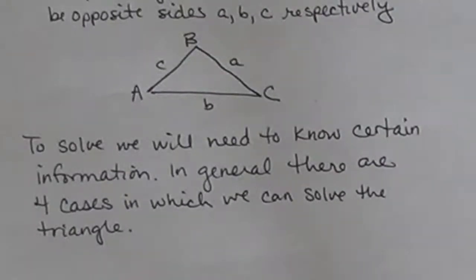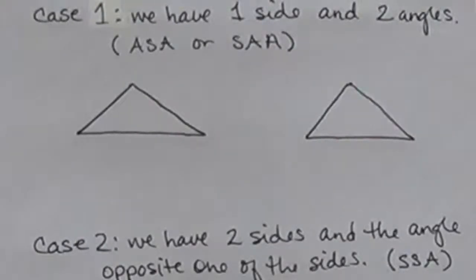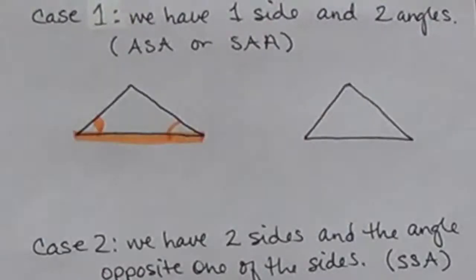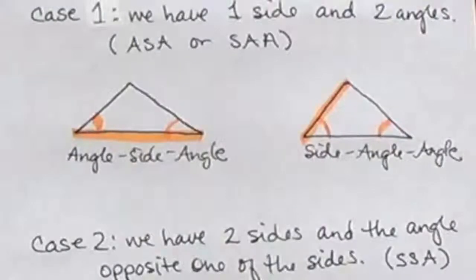To solve, we will need to know certain information. In general, there are four cases in which we can solve an oblique triangle. In case one, we have one side and two angles. It does not matter which angle and which side you have, but they are usually situated in a particular fashion — if I have an angle, a side, and then another corresponding angle, or I have a side and the next two angles. These are called angle-side-angle and side-angle-angle.